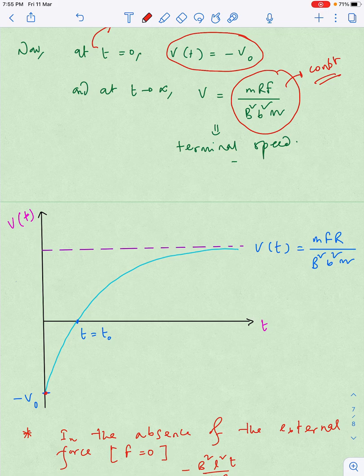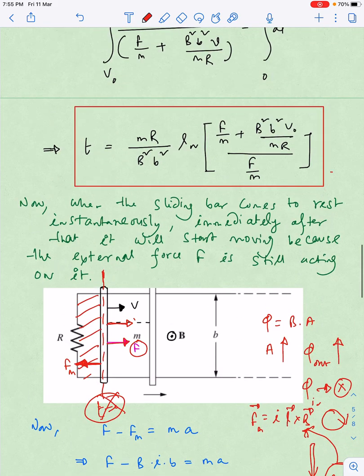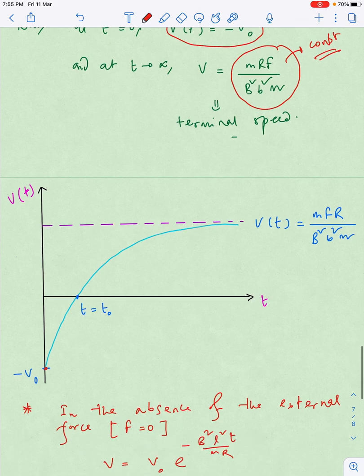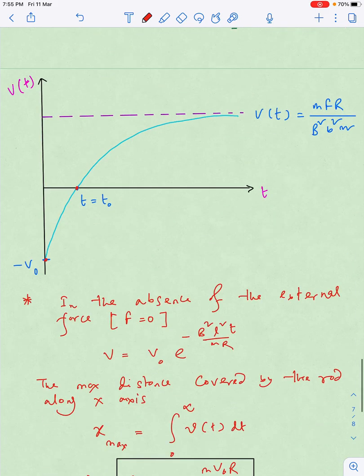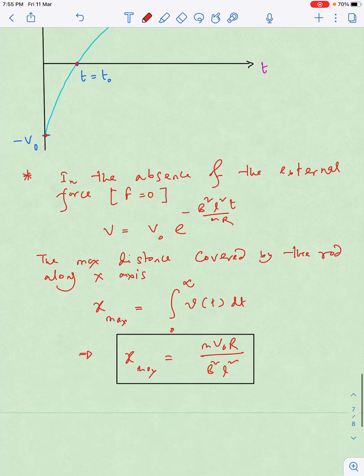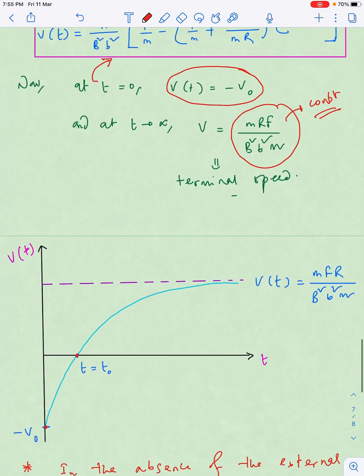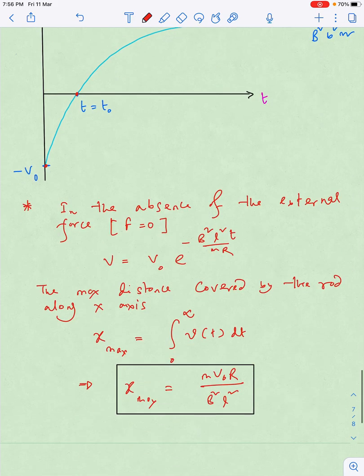It will move with constant speed in the rightward direction. If I want to plot the v versus t graph, at t equals 0 it was starting with minus v₀ in the left direction. After this amount of time it is coming to rest, so here the velocity is 0, that is t₀, and then it has exponential variation. Now I can derive a few cases. In the absence of the external force, if F equals 0, I will put F equals 0 in this equation.